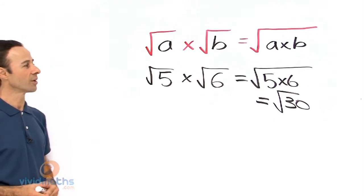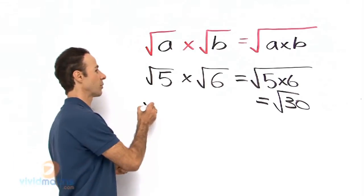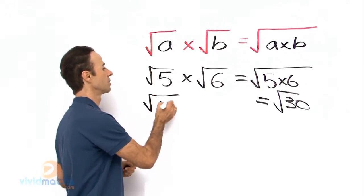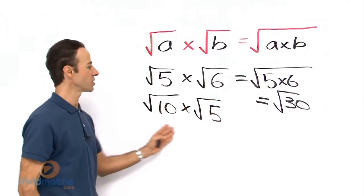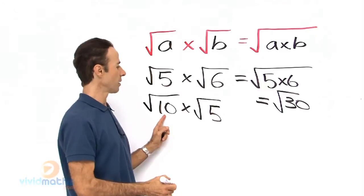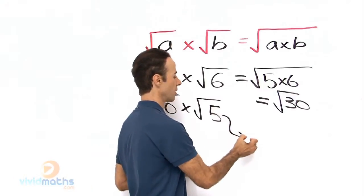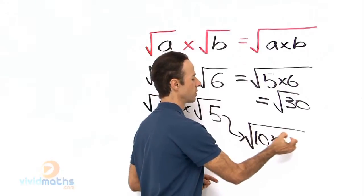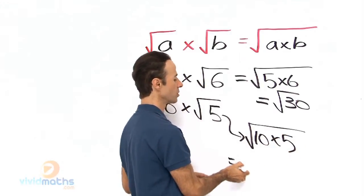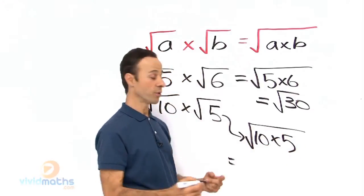Okay, so that is rule number 1. Let's try another example. Let's say we had the square root of 10 times the square root of 5. Now that is simply going to be square root of 10 times 5, which equals the square root of 50.